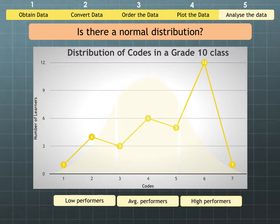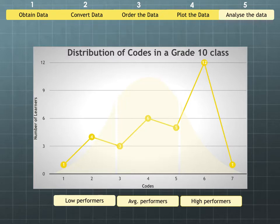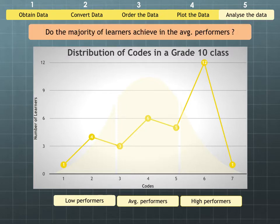The second question to ask is, do the majority of the learners achieve in the average performers section? If you have a look, the majority of the learners are actually achieving a code six in this case. So the majority of the learners in the class are actually sitting in the high performance section between the average high of the average and the high performance section.